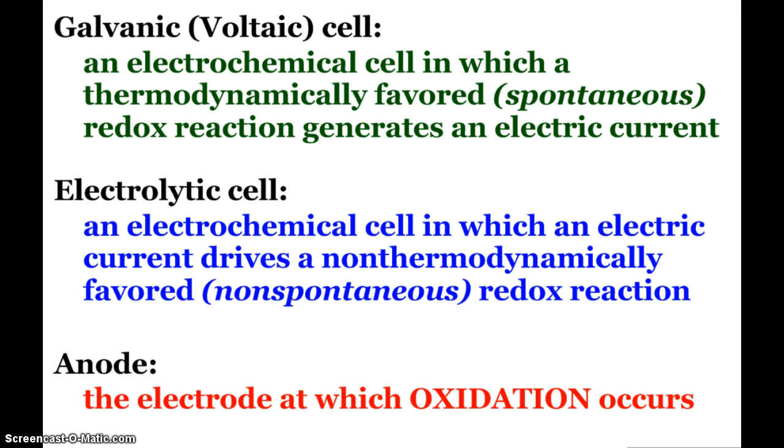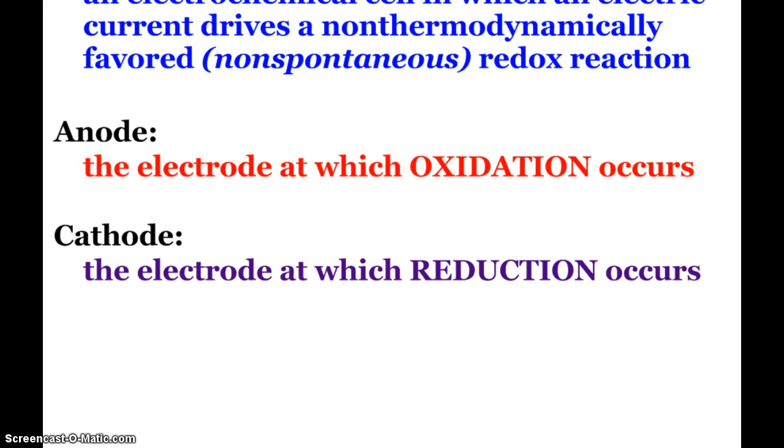For both of these cells, we want to make sure we understand and recognize that at the anode, that's the electrode at which our oxidation is going to be occurring, while the cathode is the electrode at which reduction is occurring. AP doesn't want us to have to determine what the charge of the anode and cathode is. We just really want to remember that the anode is oxidation, the cathode is reduction.